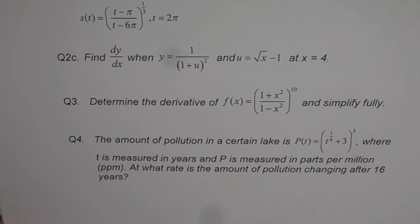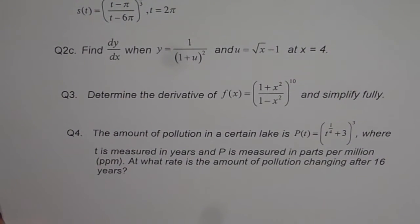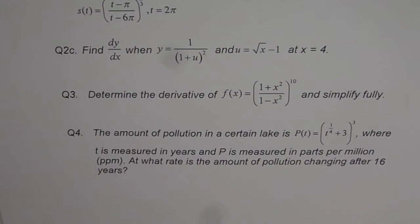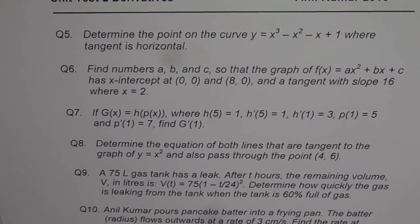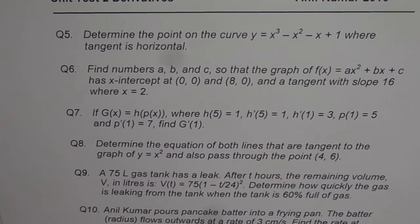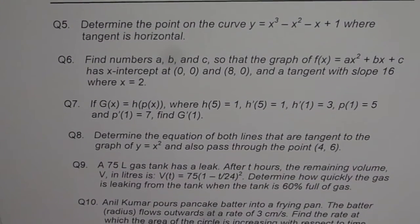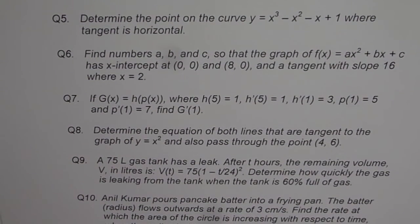So copy these questions, try to solve them. But here are the rest of the questions. I have in all 11 questions on this test paper. So now here is questions 5 to 11. Question number 5, determine the point on the curve y equals to x³ minus x² minus x plus 1 where tangent is horizontal.